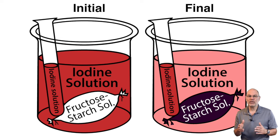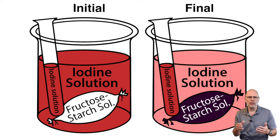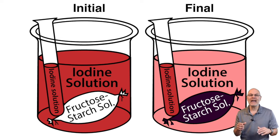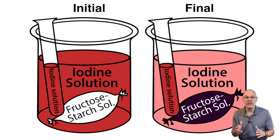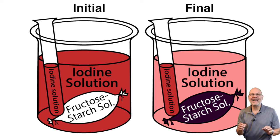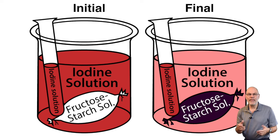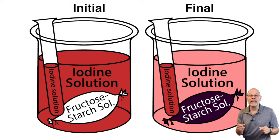The bag is not permeable to starch. We know that because when starch and iodine meet, the solution turns this purple-blackish-bluish color. But that color change is only seen inside the bag. If the bag was permeable to starch, we'd see that color change outside the bag — and we don't. So the starch couldn't diffuse down its concentration gradient; it was stuck inside the bag. On the other hand, the iodine did diffuse from the cup into the bag. That's why there was a color change inside the bag, so we can conclude that the dialysis tubing is permeable to iodine.